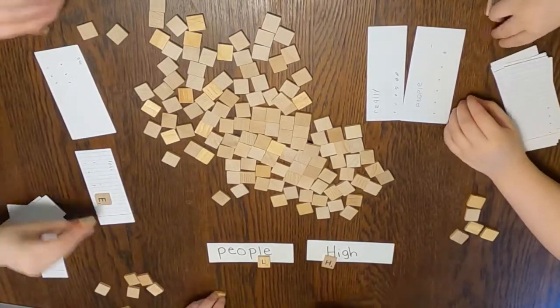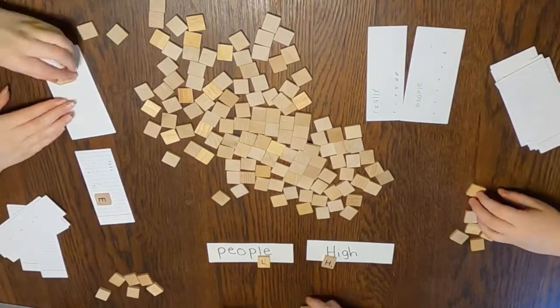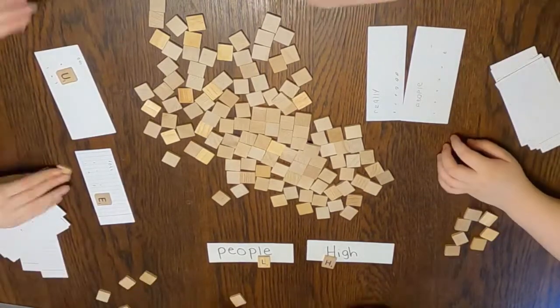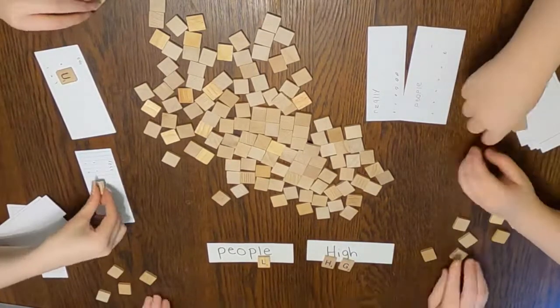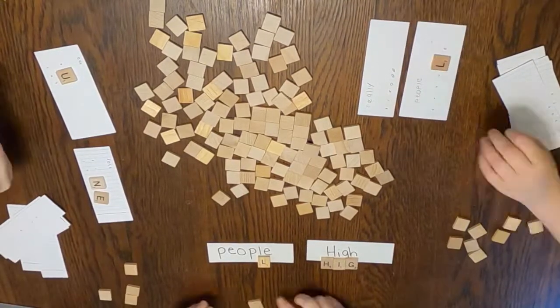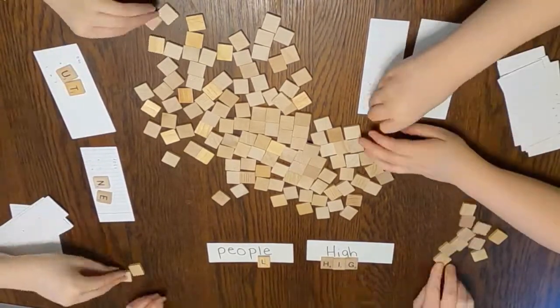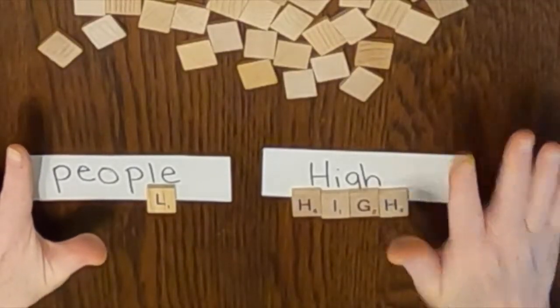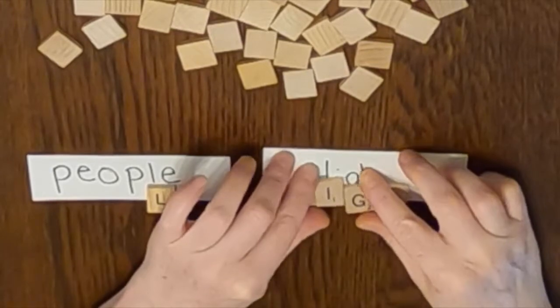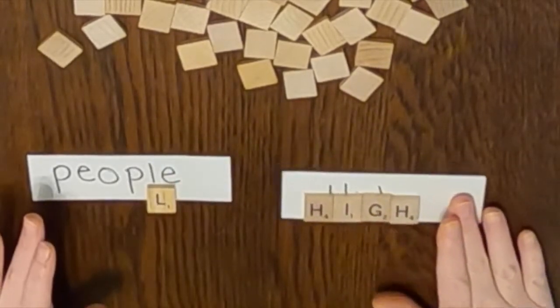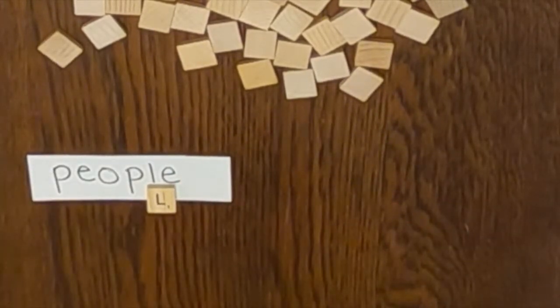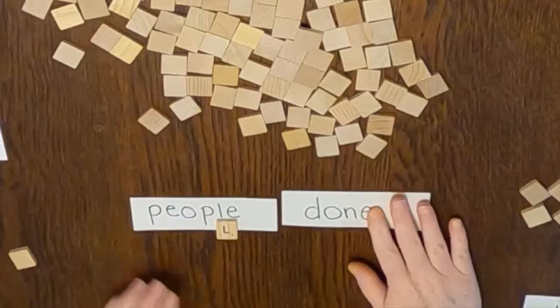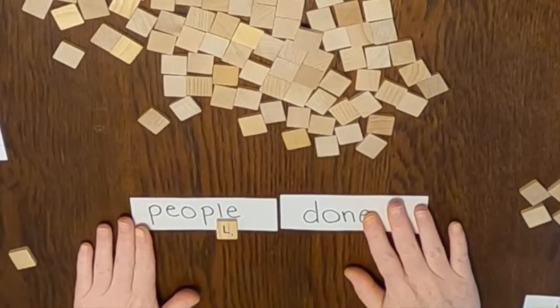So gameplay will continue like this until you have filled up one of your words. Once you have completed one of your words, you don't have to stop the game but you can then take your word card that you've completed, slide it to the side, don't put those tiles back in, slide it to the side and then flip over a new word so that you're always working on two words at a time.